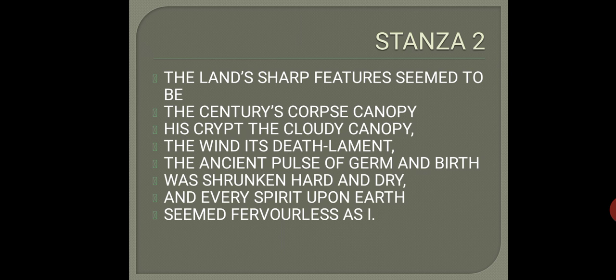There is no activity being noticed by the poet in such a gloomy atmosphere. 'And every spirit upon earth seemed fervorless as I.' The poet says that every being on this earth seems to be passionless — they are lacking in passion, and even the poet is not full of passion. There is no chance of recovery as the seed of spring is not active and everything is in a passive state.